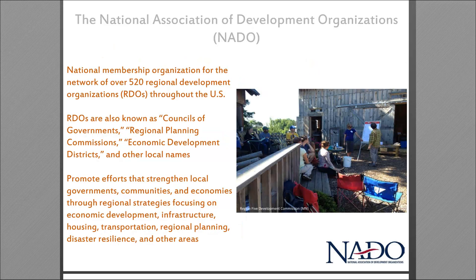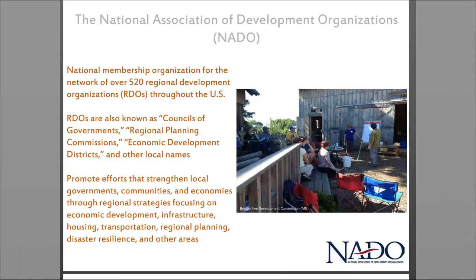NADO is a membership association of the country's 500 regional development organizations, or RDOs. RDOs might be called different things in your region — councils of government, economic development districts, regional planning commissions — but no matter what they're called, they're all multi-jurisdictional planning and development agencies that work at the regional level to improve local governments and communities by promoting economic and community development. The majority of our memberships serve communities just like yours — small metropolitan and rural regions — where RDOs provide technical assistance with planning, GIS mapping, business and economic development strategies, and guidance to small towns that may not have the expertise to do so on their own. I really encourage you to reach out and engage with your local RDO if you haven't done so already.